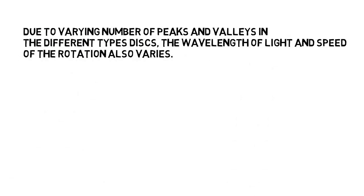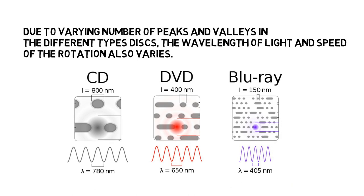Due to the varying number of peaks and valleys in the different types of discs, the wavelength of light and speed of rotation also varies. In CD, the size of the valley that implies 1 bit is 800 nm, and the light of wavelength 780 nm is used to read the data. In DVD, the valley size for 1 bit is 400 nm, and light of wavelength 650 nm is used. In Blu-ray disc, the valley size for 1 bit is 150 nm, and light of wavelength 405 nm is used.